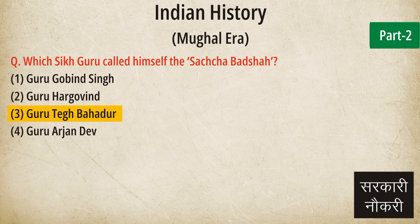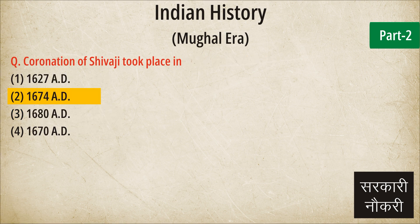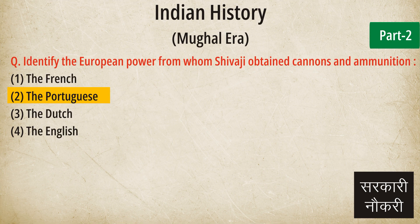Question: Which Sikh Guru called himself the Sachcha Badshah? Answer: Guru Teg Bahadur. Question: Coronation of Shivaji took place in? Answer: 1674 AD. Question: Identify the European power from whom Shivaji obtained cannons and ammunition. Answer: The Portuguese.